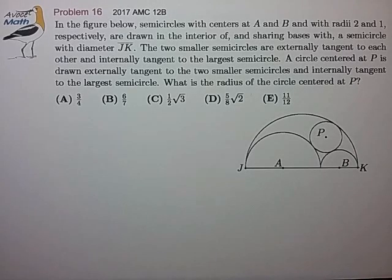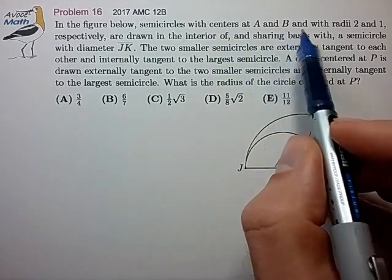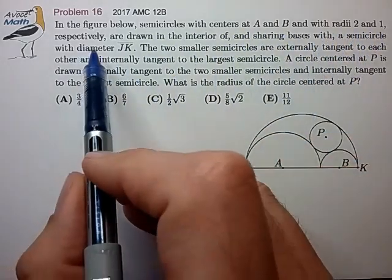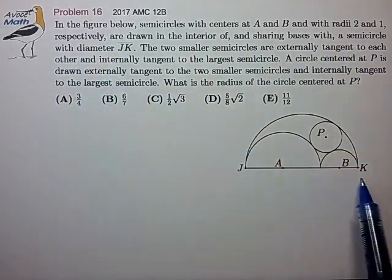Hi, this is problem 16 from the AMC 12A. In the figures below, semicircles with centers at A and B with radii 2 and 1 are drawn in the interior of a semicircle of diameter JK.